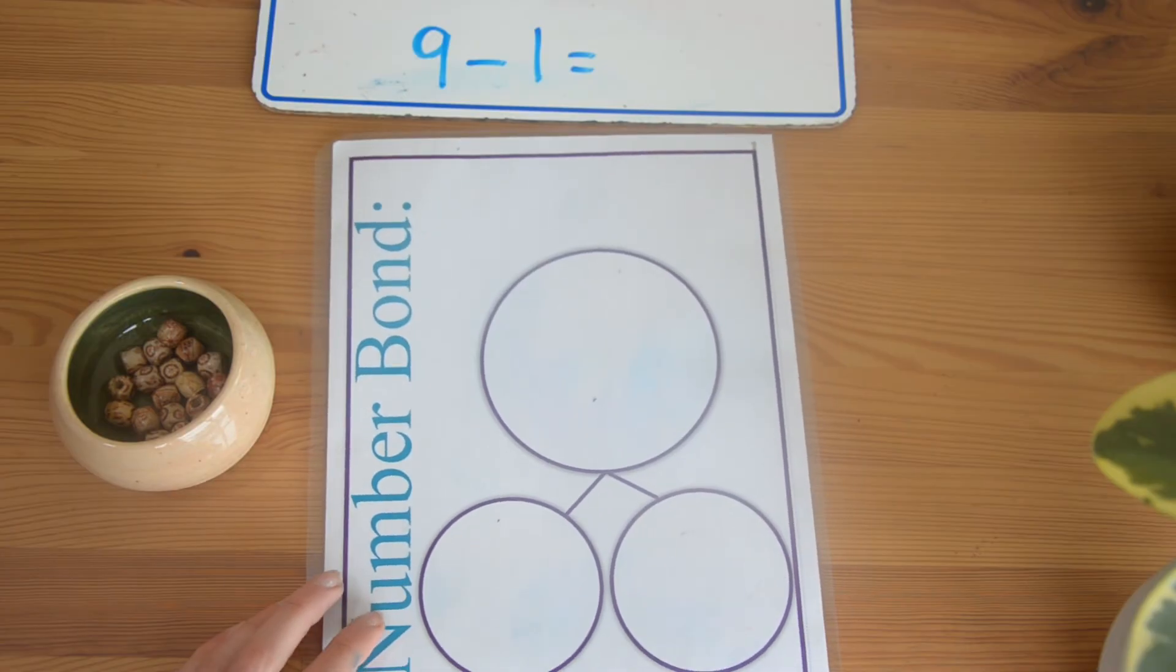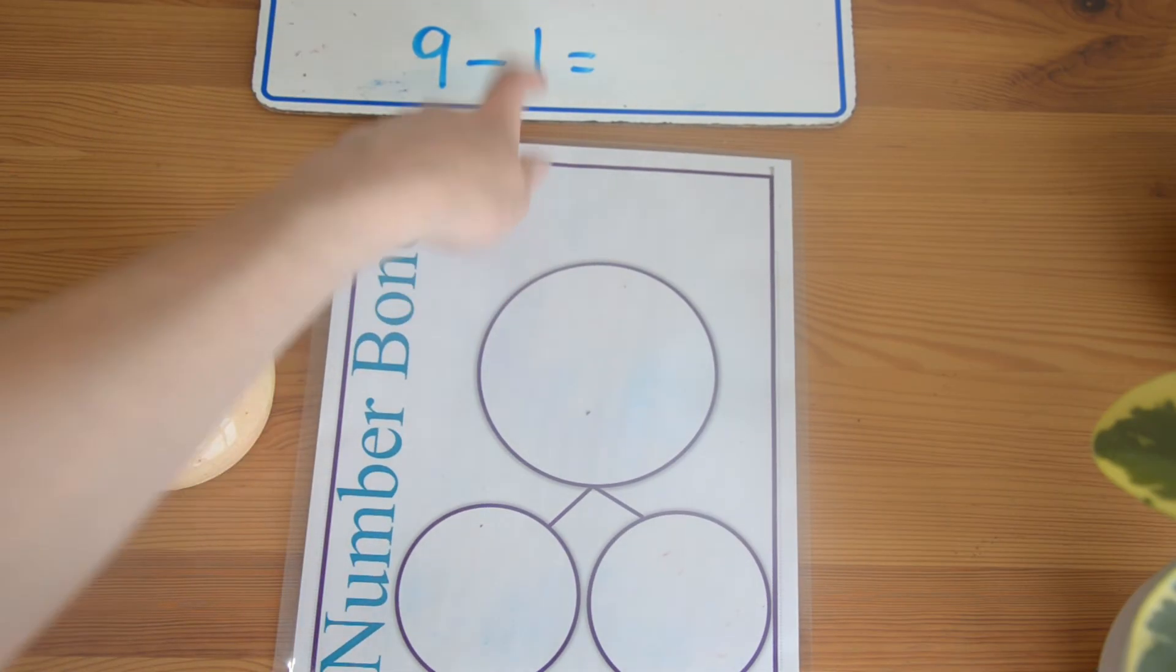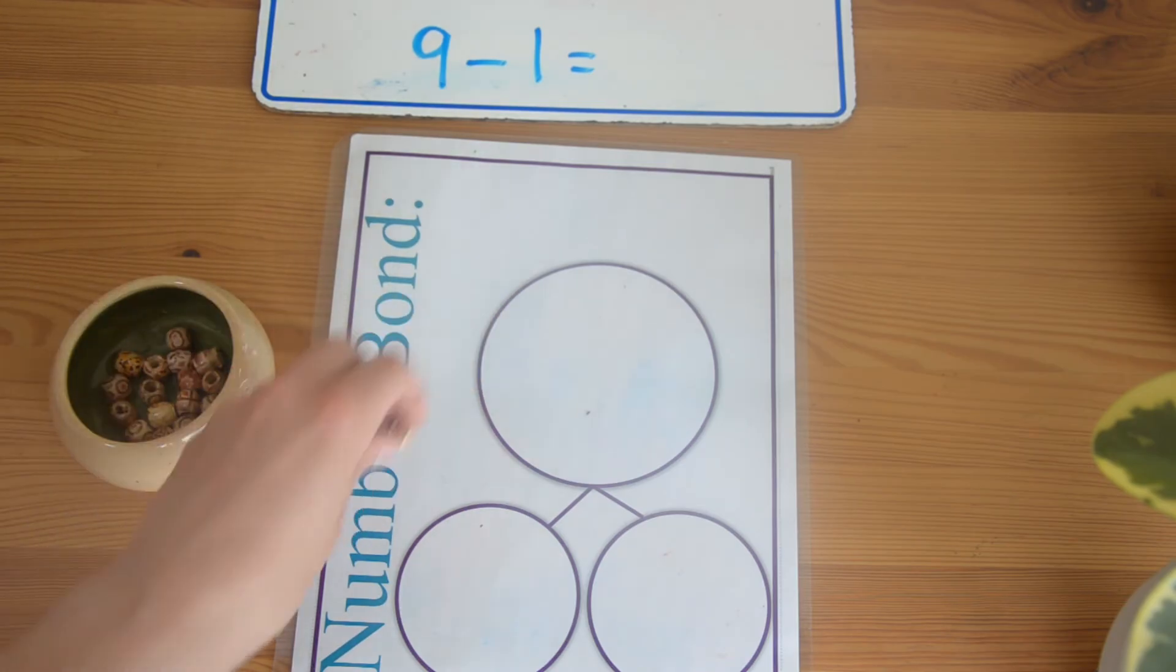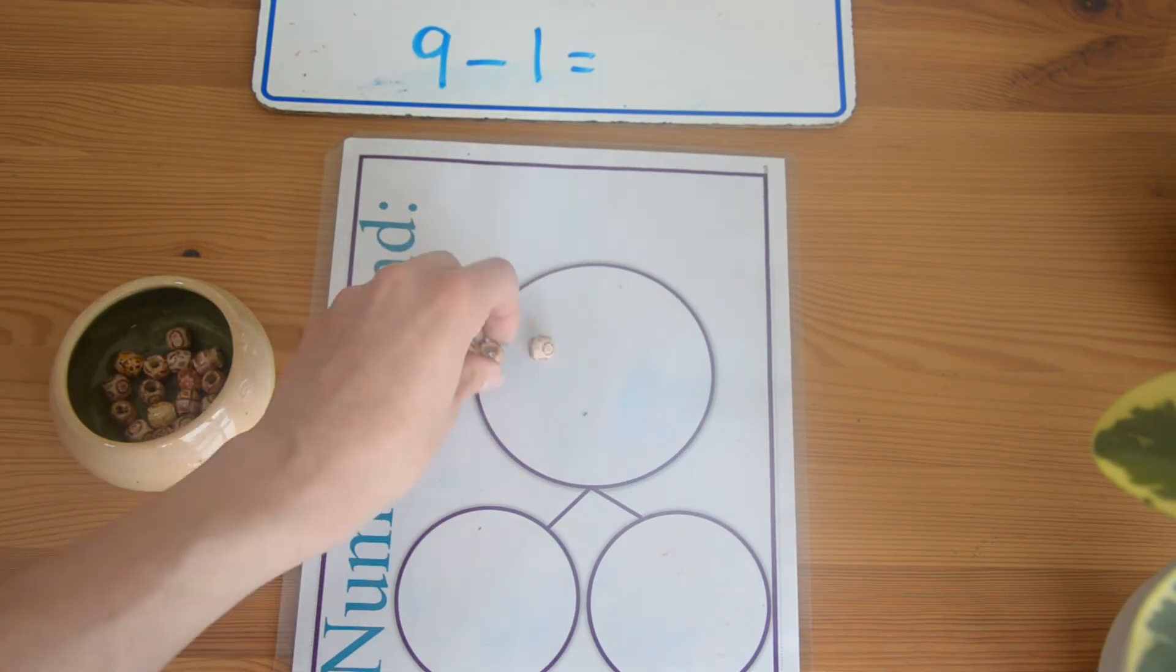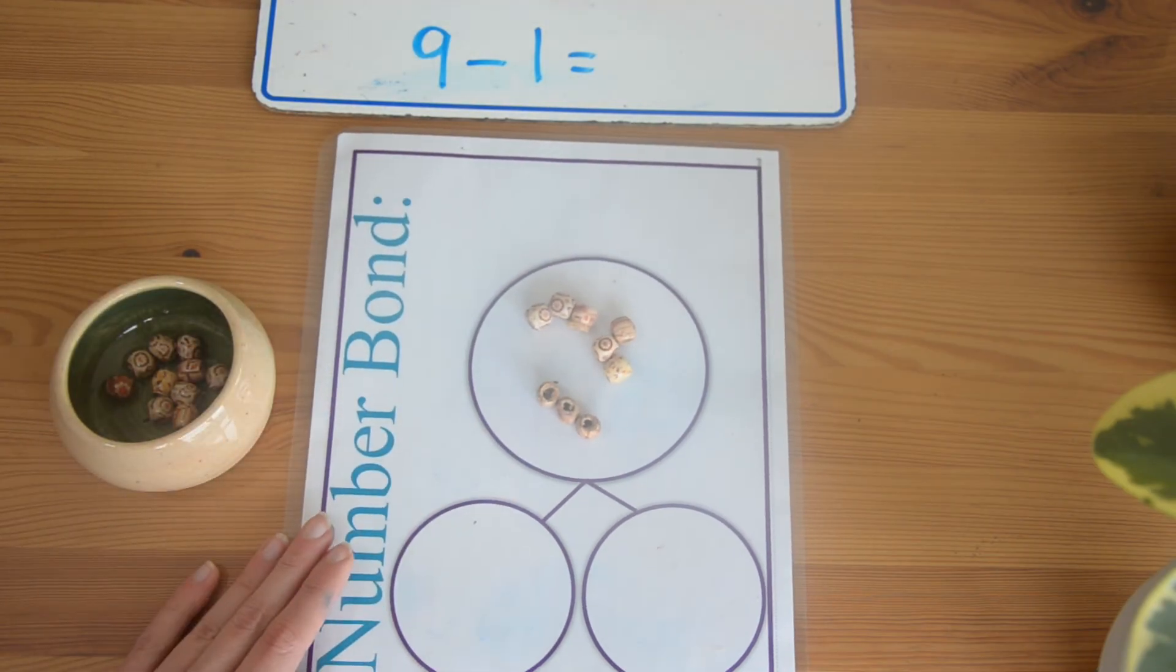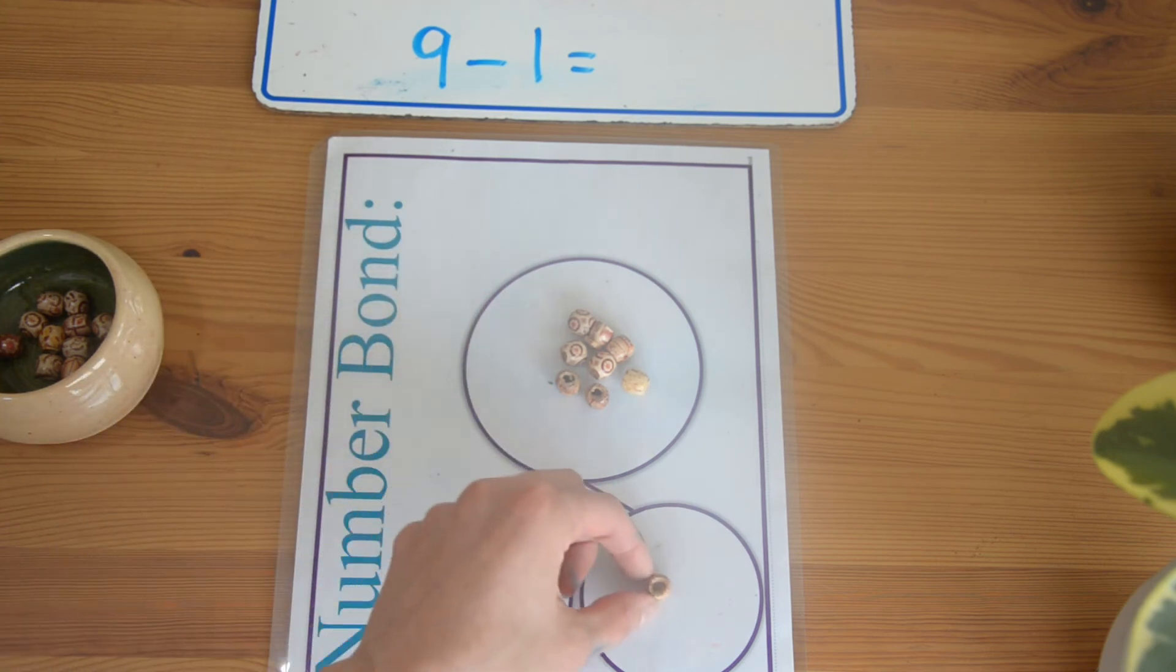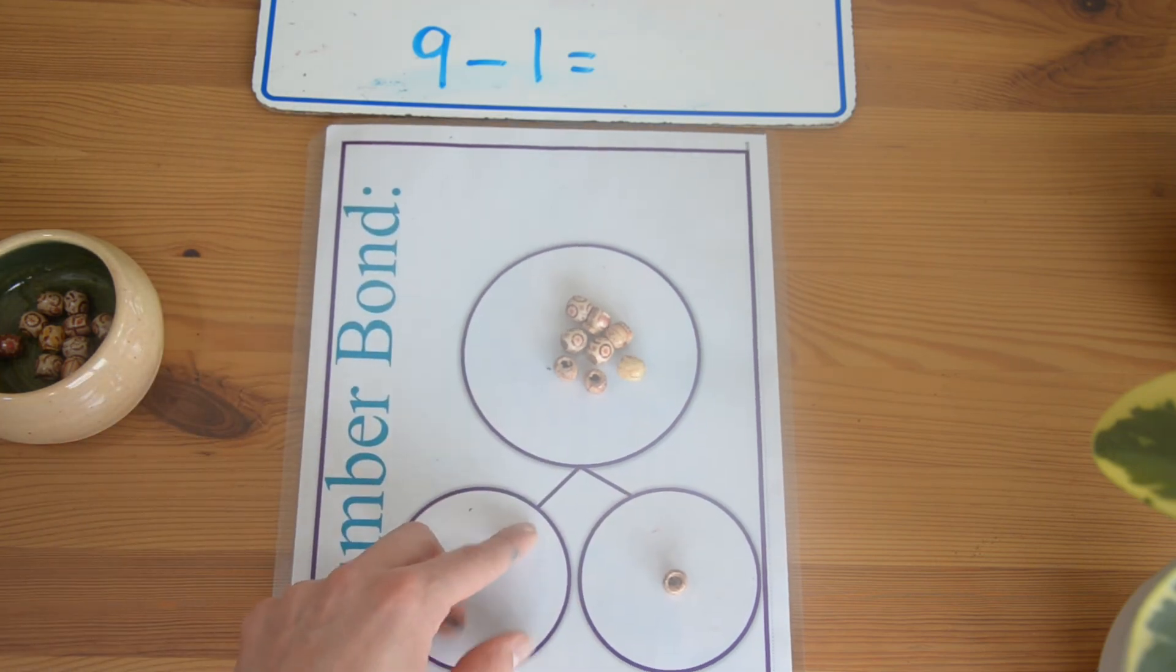So again, we have my whole number and we have one part. Let's put this down. In my whole number, I have nine. Now I've got nine, and one of my parts is one. So let's put one down there. That must mean that all of these go into this part.